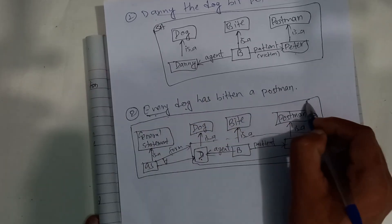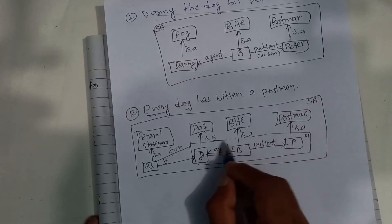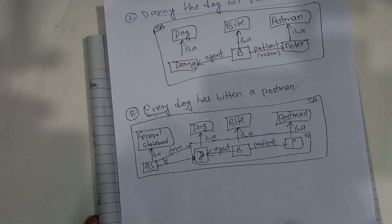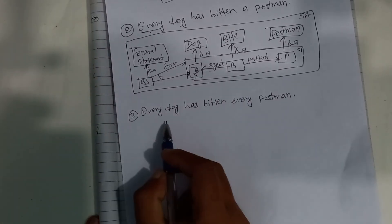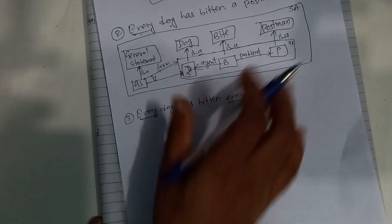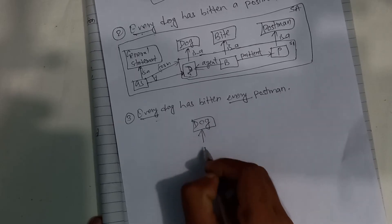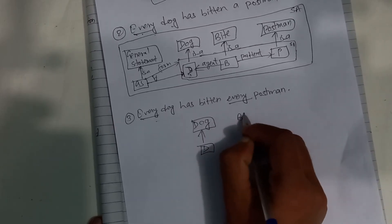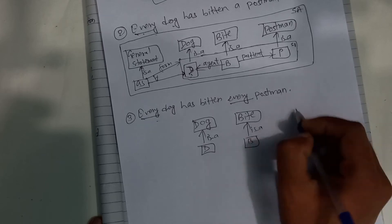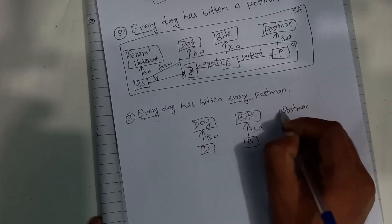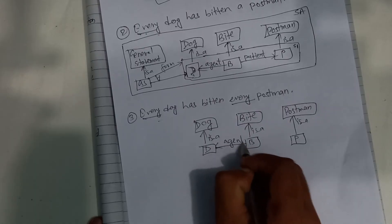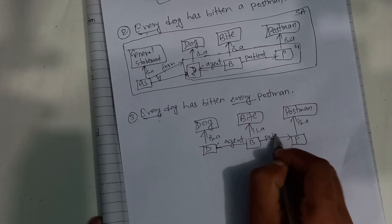Now we have the next question: every dog has beaten every postman. Now we have two types of quantification. Dog is a dog class. Bite: B is an instance of bite. Postman: P is an instance of postman. Now we have to call the dog the agent and the postman the victim.